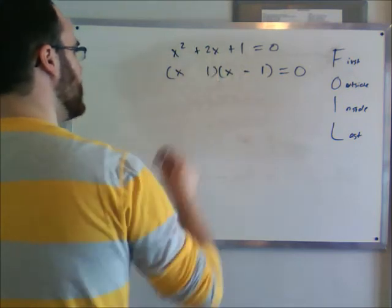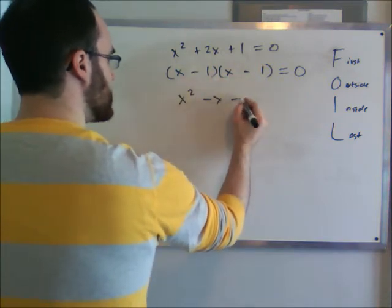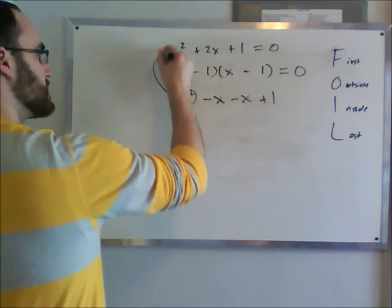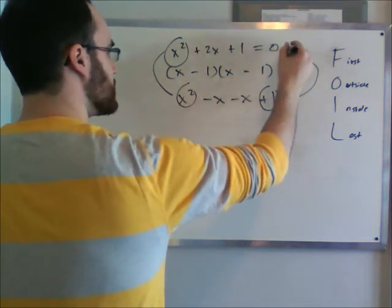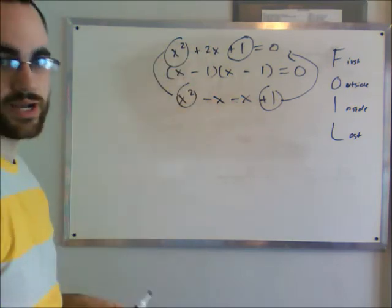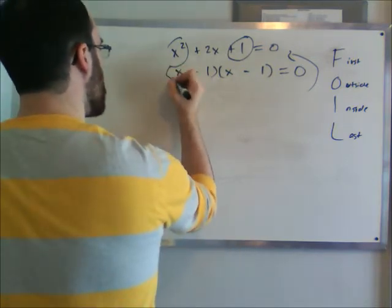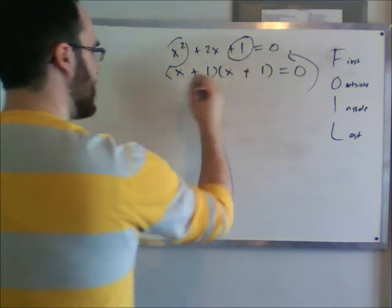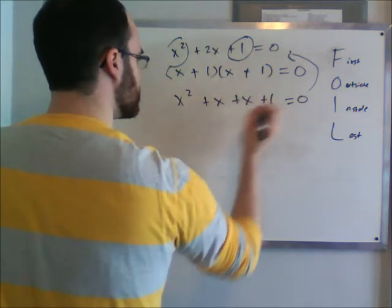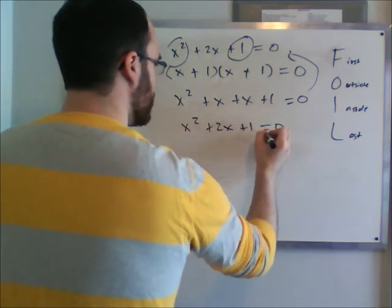Let's try changing this to a negative. Now we're going to have x times x is x squared minus x minus x plus 1. So this term now matches this term, and this term now matches this term. That's excellent. However, 2x does not equal negative 2x. So we'll try our last combination that is possible, which is going to be pluses here. x times x is x squared plus x plus x plus 1 equals 0. So we have x squared plus 2x plus 1 equals 0. We factored it properly.